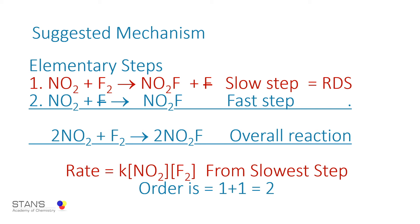Fluorine here is also considered to be a reactive intermediate. It is produced in the first step — reactive intermediates are always products in one elementary step and are consumed in the next. The first step produces the fluorine atom; the second step consumes it. When you add the two elementary steps together, you get the overall reaction, which is the net equation: 2NO2 plus F2 giving 2NO2F. The rate law is always written from the slowest step or rate determining step. In the rate determining step, we have one NO2 and one F2 molecule, so rate equals k times NO2 raised to 1, F2 raised to 1, giving an order of 1 plus 1 equals 2.